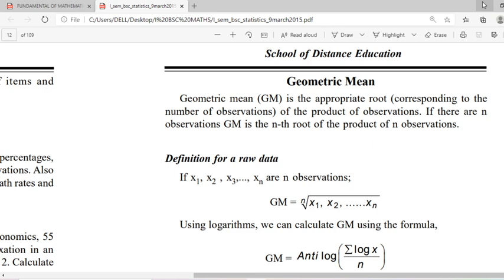As we have discussed the details of arithmetic mean, suppose you are given n observations x1, x2, xn, then how can we find out the geometric mean? First of all we have to take the product x1, x2, xn and take the nth root, so that is the geometric mean.